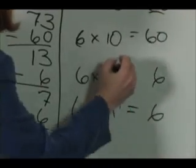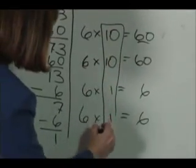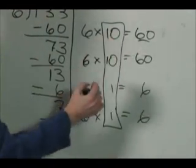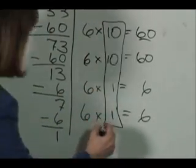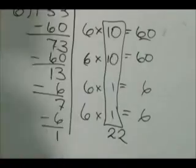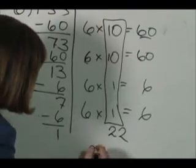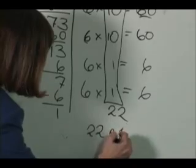Then, to get your answer, you add up all of these. 10 plus 10 is 20, plus 1 is 21, plus 1 is 22. And there's our answer. 22, remainder of 1.